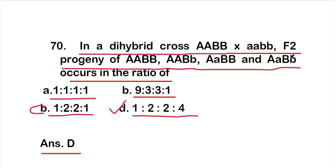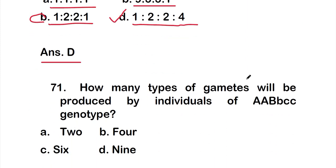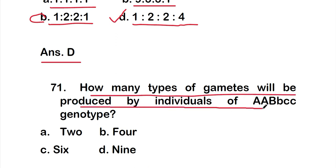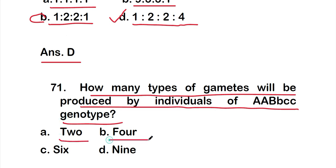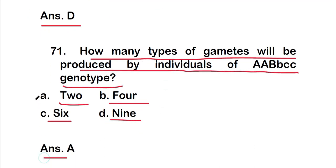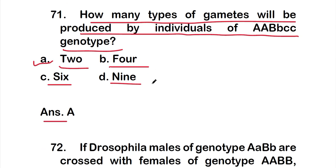Question 71: how many types of gametes will be produced by individuals of genotype AABbCc? Option A: 2, Option B: 4, Option C: 6, Option D: 9. The right answer is Option A — 2. Two types of gametes will be produced by individuals of genotype AABbCc.